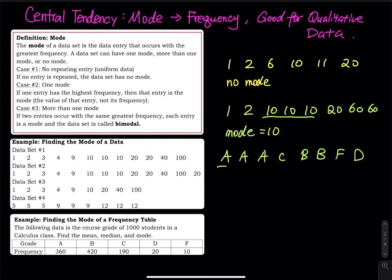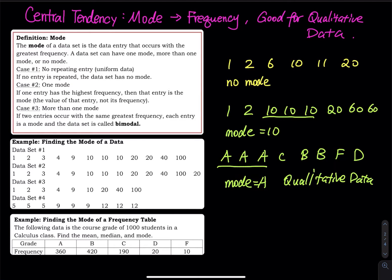Mode doesn't have to apply to quantitative values. It can be qualitative: for example, A, A, A, C, B, B, F, D — the mode is A because A has the highest frequency. Note: mean and median work for quantitative data only. Mode is good for both quantitative and qualitative data.